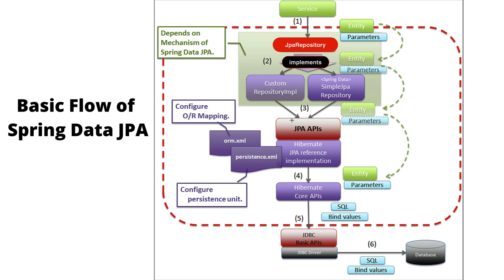The JPA API internally calls Hibernate core APIs, and then Hibernate generates the SQL queries based on the method call. For example, if we want to persist an object into a database table, Hibernate will create an INSERT SQL query. It will then internally call JDBC APIs, and the JDBC API will talk with the database. So the service layer calls Spring Data JPA repository methods, which use JPA APIs, which call Hibernate core APIs, which generate the SQL and use JDBC to execute it.